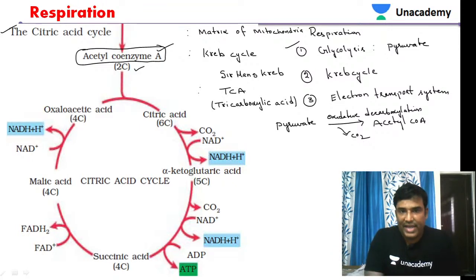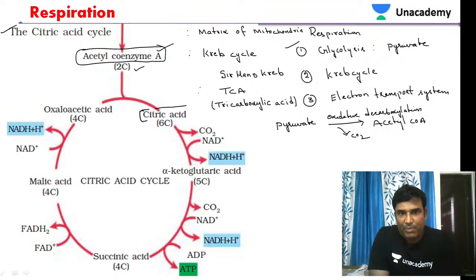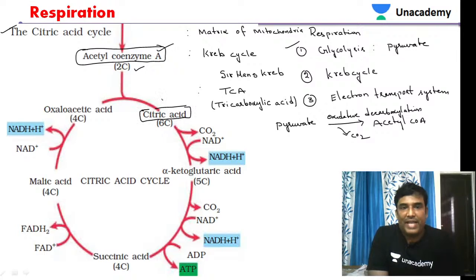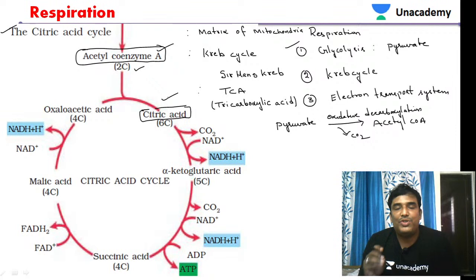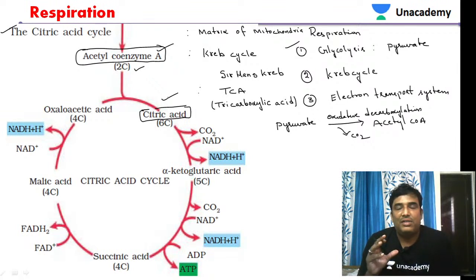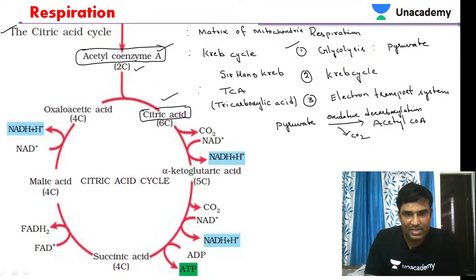Citric acid is the first stable product formed during this cycle. Because the first stable product is citric acid, this cycle is also called the citric acid cycle.